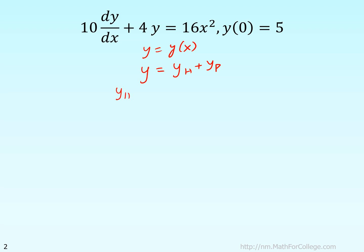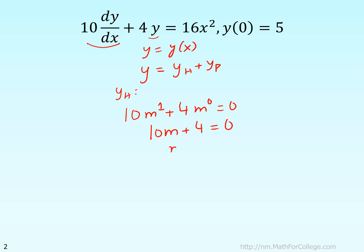Let's find the homogeneous part of the solution by looking at the characteristic equation. It will be 10m to the power 1 — that is the first derivative term — plus 4m to the power 0 — that's the zeroth derivative term — equal to 0. So we get 10m plus 4 equal to 0, giving m equal to minus 4 divided by 10, which is minus 0.4. Hence the homogeneous part is k·e^(−0.4x).